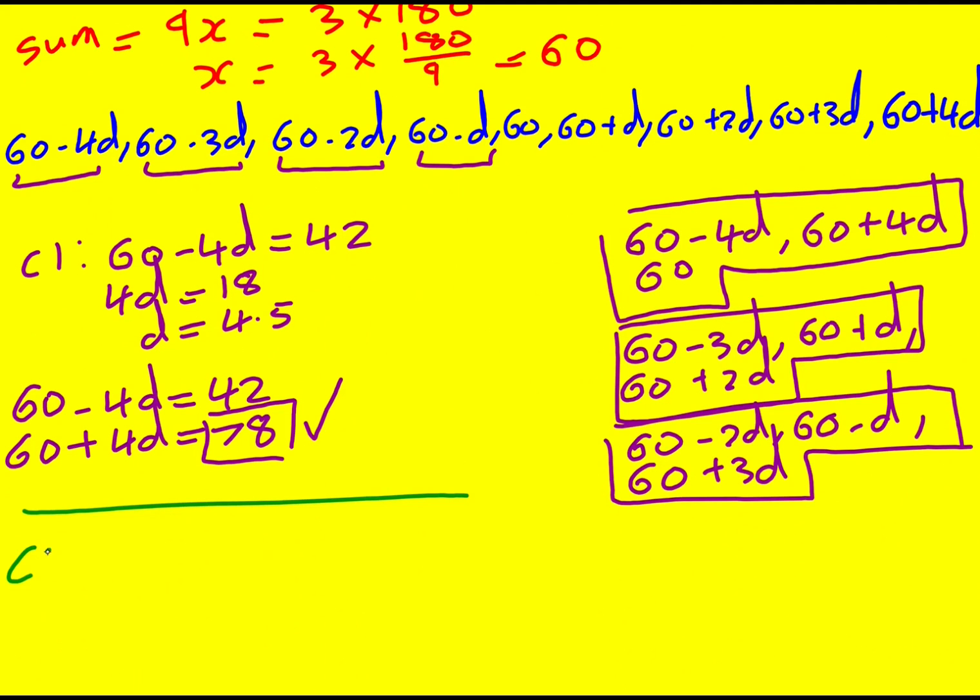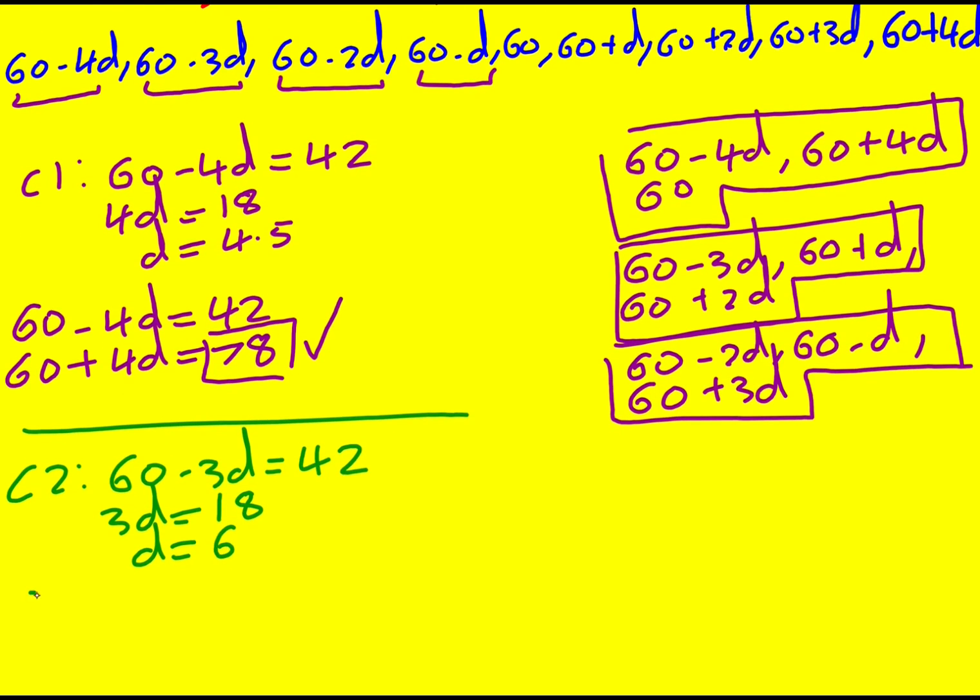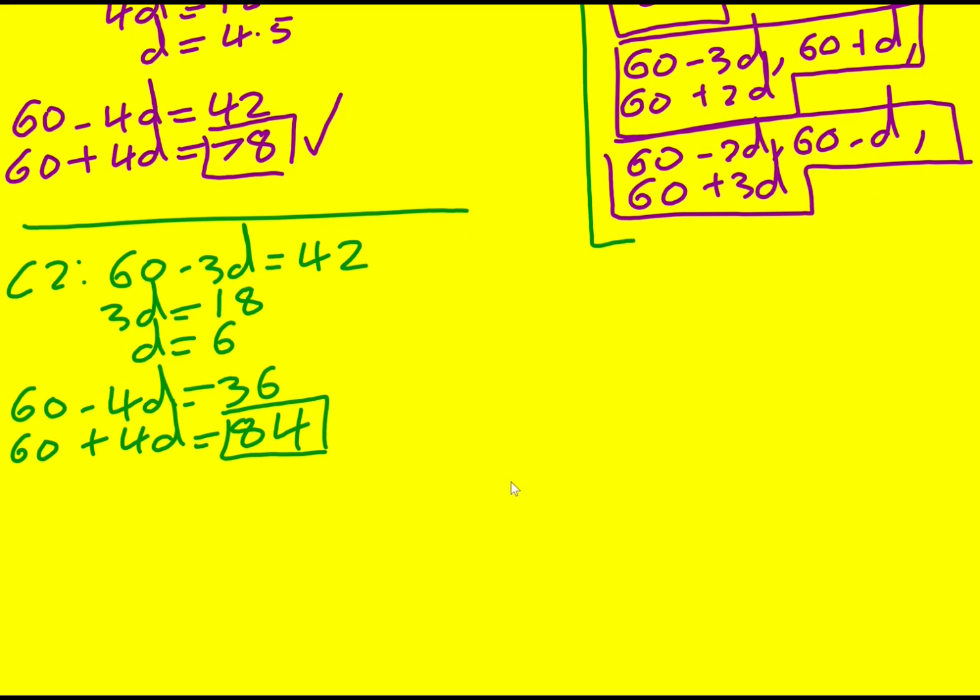Let's move on to case two. So now 60 minus 3d is going to be 42. That means 3d is equal to 18 and d is equal to 6. 60 minus 4d will then be 60 minus 24, so 36. 60 plus 4d is 60 plus 24, so 84. And this again, we can construct it. I don't feel like I need to actually write down the numbers because I've kind of proven that I can always construct three pairs that add to 180.